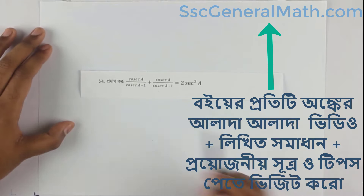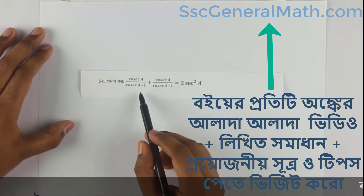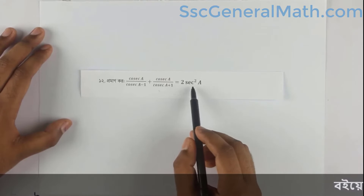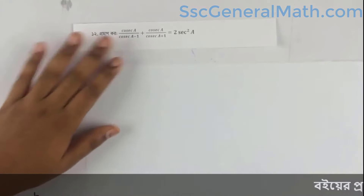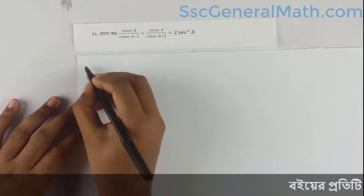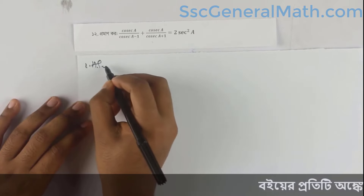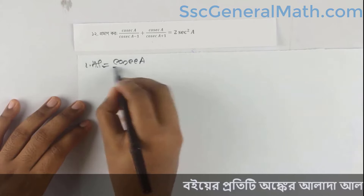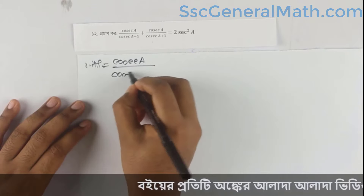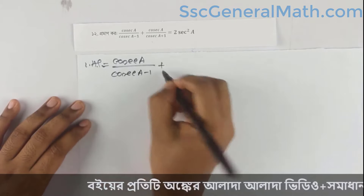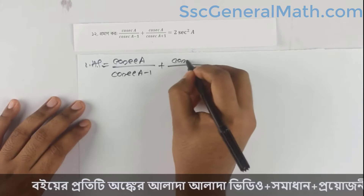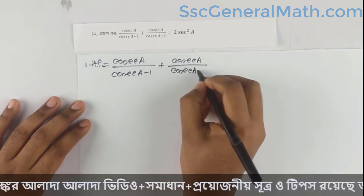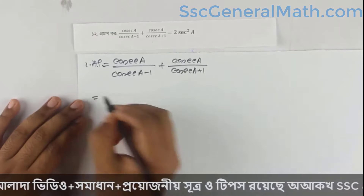Prove that cosec(a) divided by (cosec(a) minus 1) plus cosec(a) divided by (cosec(a) plus 1) is equal to 2 sec squared a. So my left hand side has two terms. Left hand side: cosec(a) divided by (cosec(a) minus 1) plus cosec(a) divided by (cosec(a) plus 1).